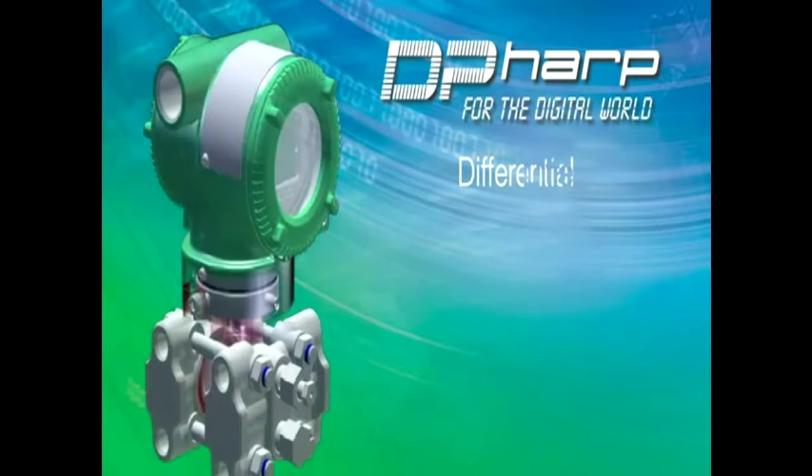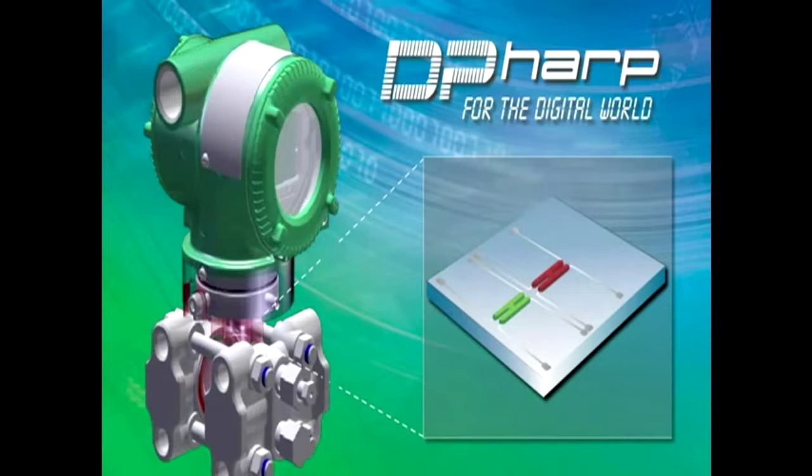At the heart of the transmitter lies the DP-HARP sensor, which incorporates two resonators that offer digital precision to provide higher performance over traditional analog sensor types.